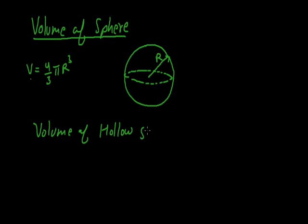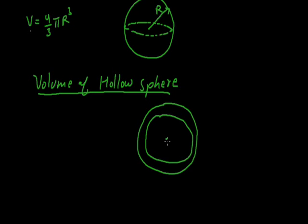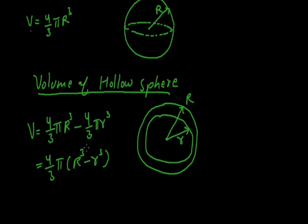You can also call it a spherical shell. Let's draw the diagram. There is an external radius known as capital R and an internal radius small r, and there is nothing inside — so this is a hollow sphere or spherical shell. Its volume is defined as the volume of the outer sphere minus the volume of the inner sphere: 4/3 π R³ minus 4/3 π r³, which simplifies to 4/3 π (R³ − r³).